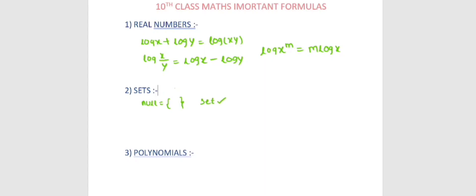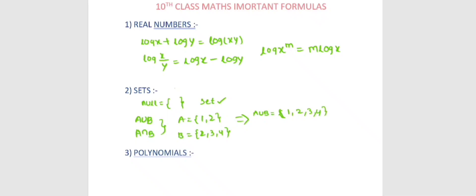For sets, we have A union B and A intersection B. For example, if A equals {1, 2} and B equals {2, 3, 4}, then A union B gives all elements: {1, 2, 3, 4}. A intersection B gives the common elements. We also have A minus B and B minus A.